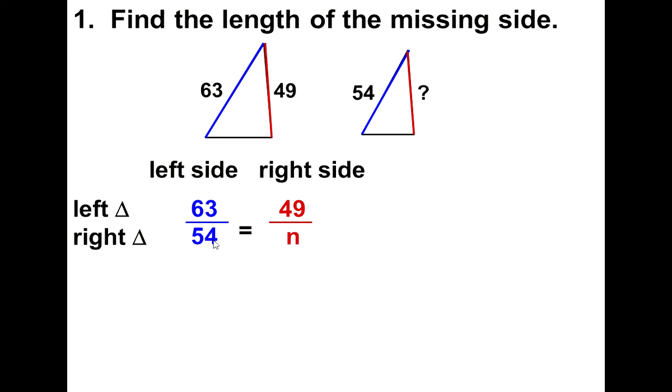If I cross multiply 54 by 49 and divide by this 63, because it's on the same diagonal as the variable, I would get my answer. n is 42.